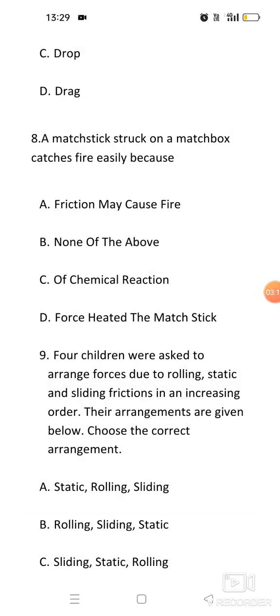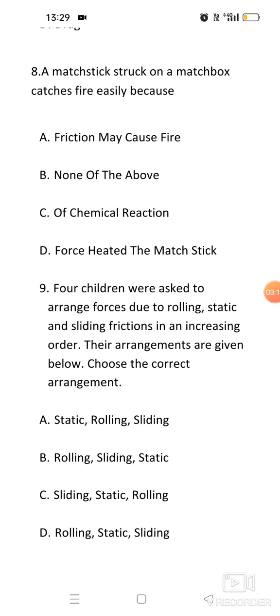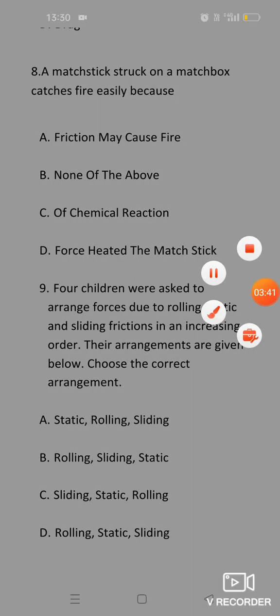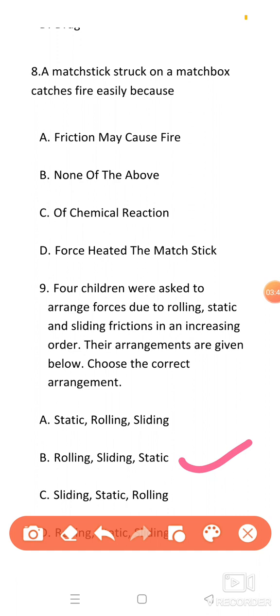Question 9: Four children were asked to arrange forces due to rolling, static and sliding friction. We had already discussed that out of these three frictions, rolling friction is the lesser one, and the highest friction is static friction. So if we have to arrange them in increasing order, then answer will be option B. First comes rolling, then sliding, then static friction.